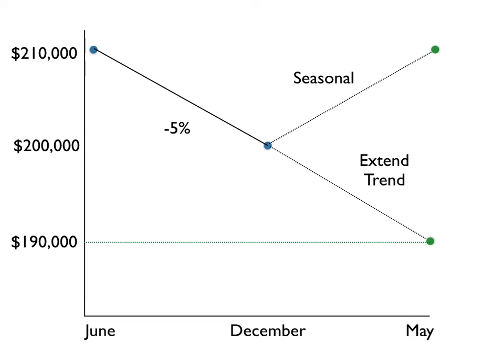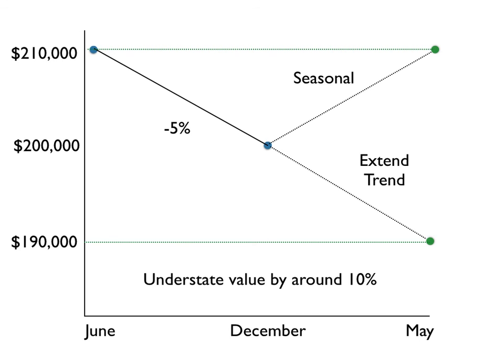So the question is, is the value $190, $200, or $210? If we think about the seasonality factor, we would have to conclude that the value is really much closer to $210, and if we extended our trend line down, we would actually be understating the value by around 10%.